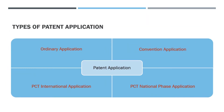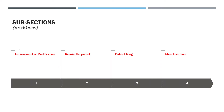Here, types of patent applications are given. Patent applications can be classified into Ordinary Application, Convention Application, PCT International Application, and PCT National Phase Application. And here we will discuss Patents of Addition.